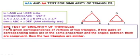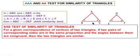SAS (Side-Angle-Side) test for similarity of triangles: For a given correspondence of vertices of two triangles, if two pairs of corresponding sides are in the same proportion and the angles between them are congruent, then the two triangles are similar. For example, if AB divided by DE is equal to BC divided by EF, and angle B is congruent to angle E, then the two triangles are similar by the Side-Angle-Side test.